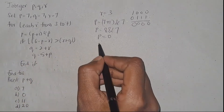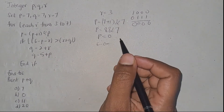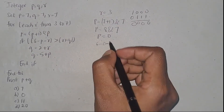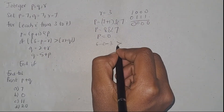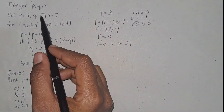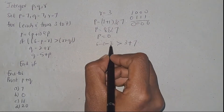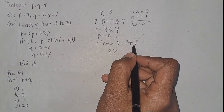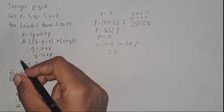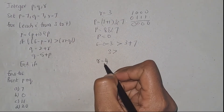Now check the if condition: 6 minus 0 minus r, where r is 3. Is 3 greater than r plus q, that is 3 plus 7? So 6 minus 3 equals 3 — is 3 greater than 10? This is false, so we will end the if condition. Next iteration, r equals 4.